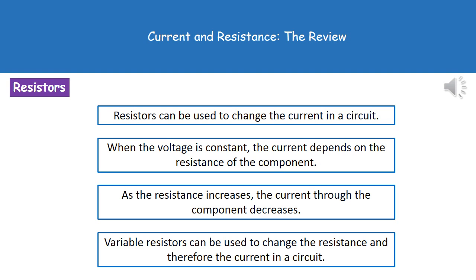Now there is a device that we can actually use in our circuit to change the current, and that's something called a resistor. So by using a resistor in our circuit we can change the current when the voltage remains the same. What we find is if we increase the resistance then the current will decrease, whereas if we decrease the resistance then the current will increase.